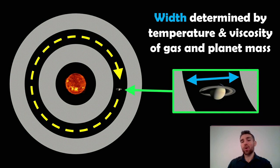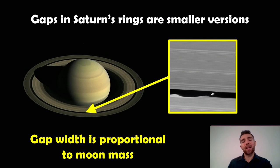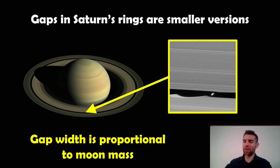The width of that gap is mostly determined by the temperature of the disk, the viscosity of the gas in the disk, and the planet's mass — the bigger the planet the wider the gap it will clear, because it has more mass and a wider sphere of gravitational influence. The same thing actually occurs with Saturn's rings — moons inside Saturn's rings clear out gaps as well, and the width of the gap a moon creates relates to its mass. A bigger moon causes a wider gap, so exactly the same sort of thing with a planet in a gas disk, although the physics is slightly different.